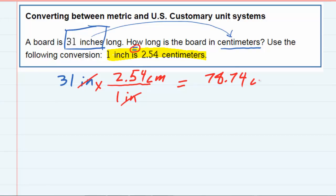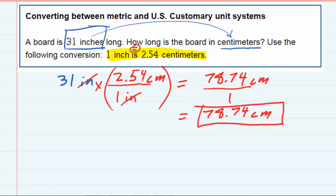The centimeters are still in the top. Technically, I have the one in the bottom. But 78.74 divided by one isn't going to change anything, 78.74 centimeters. That's my converted units. But the key is setting up this conversion.